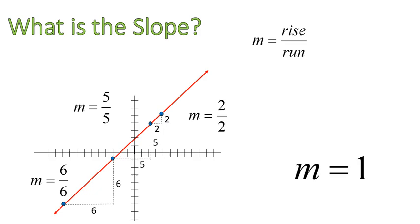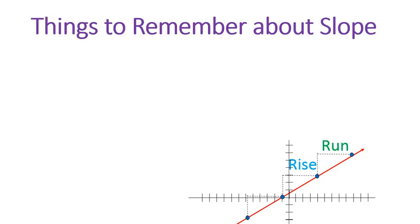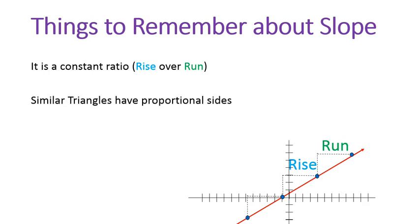Slope is a consistent ratio of the amounts the line changes up and down, the rise, and the amount that it changes from side to side, which is called the run. So a couple things to remember. It is a consistent ratio of rise over run. And similar triangles have proportional sides and help to show us the rise over the run. Hope this lesson's been helpful for you.